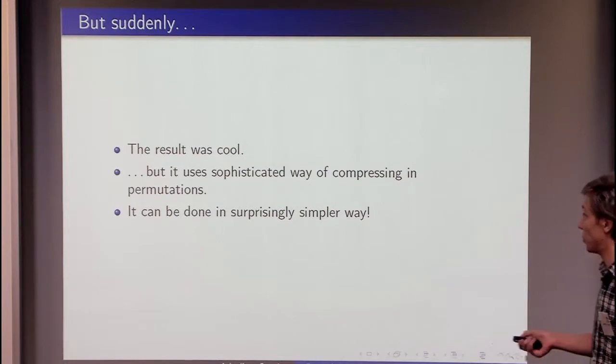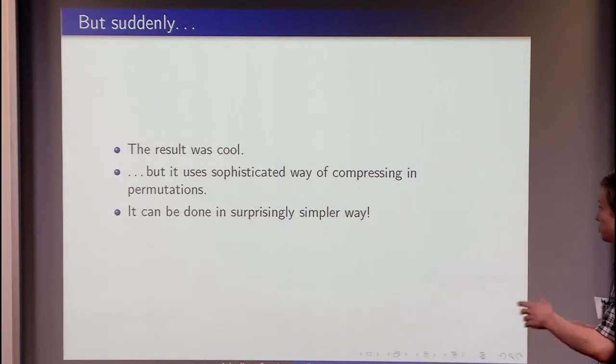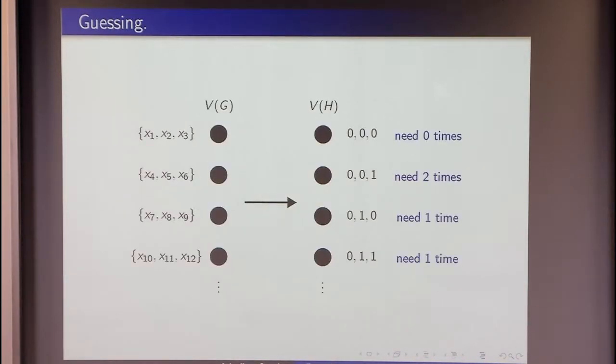So this was cool. But we have used a sophisticated way of compressing in permutations. And moreover, we were very careful during this packing to avoid too many kinds of conflicts. It was quite complex. It can be done much, much simpler. What was the problem with our first naive approach of packing?